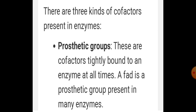Peroxidase and catalase catalyze the hydrolysis — that is, the breakdown — of hydrogen peroxide to water and oxygen. Heme is another type of prosthetic group and they are part of the active site of the enzyme.